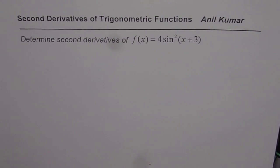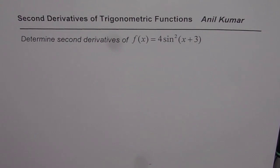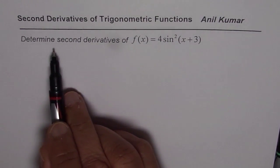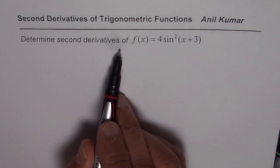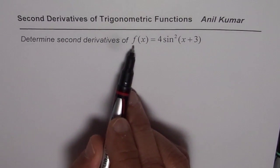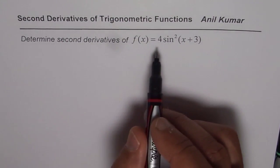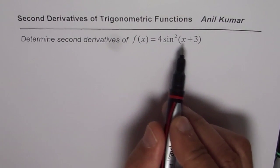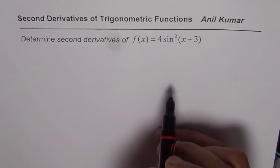I am Abdul Kumar and now let us explore second derivatives of trigonometric functions. The question here is: determine the second derivative of f of x equals 4 sine square x plus 3.